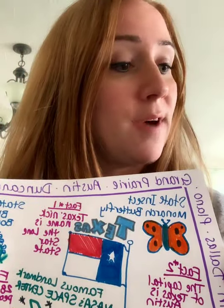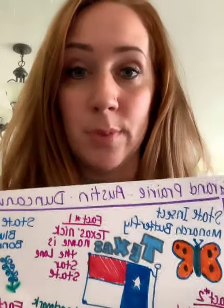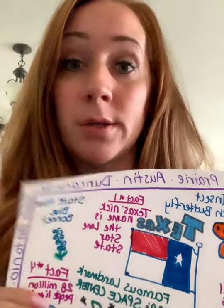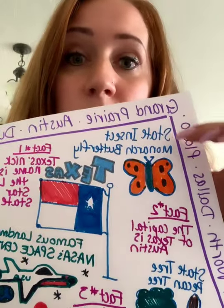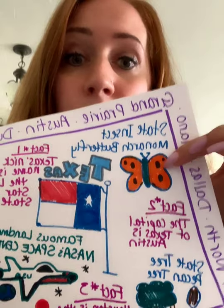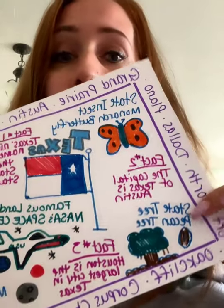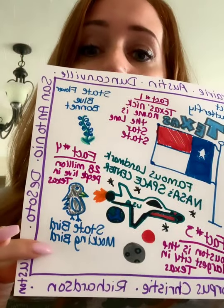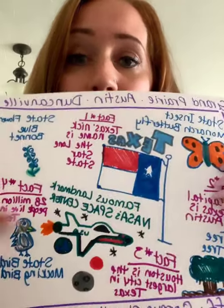Step number five: include four state symbols. Symbols are things that are symbolic of Texas that Texas is known for, and you're going to include a small illustration with each. The symbols I chose to use were the bluebonnet — the state flower — the state insect, the monarch butterfly, the state tree, which is the pecan tree, and the state bird, which is the mockingbird. So those were my four symbols.